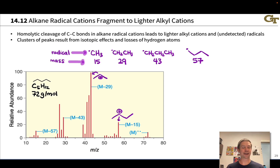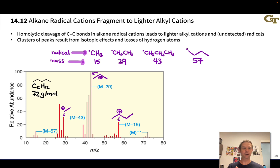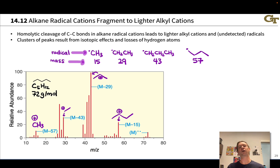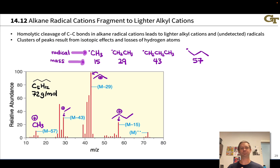M minus 29 means we've lost an ethyl radical, leaving a three-carbon saturated cation such as the isopropyl cation or the primary propyl cation. M minus 43 gives a two-carbon fragment with a molar mass of 29 g/mol — a two-carbon cation with the positive charge on one of the ends. M minus 57 corresponds to a molar mass of 15 g/mol, which is simply the CH₃ cation. This is common in mass spectra of alkanes and compounds containing long alkyl chains; any compound with a five-carbon linear saturated chain would display a similar pattern of gaps between peaks.